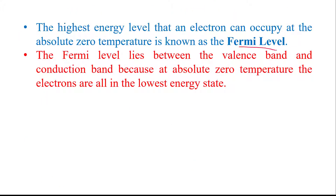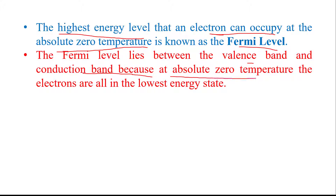Another definition of Fermi level: Fermi level is the highest energy level that an electron can occupy at absolute zero degree temperature. Fermi level lies between the valence band and conduction band because at absolute zero degree temperature, the electrons are in the lowest energy state. These are the definitions of Fermi level.